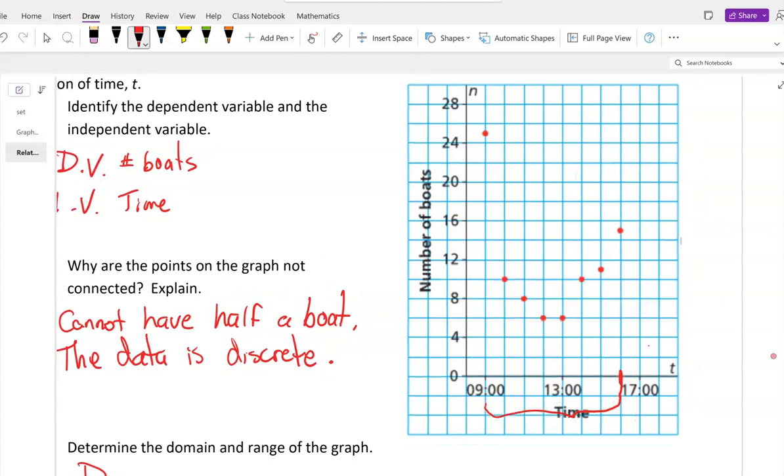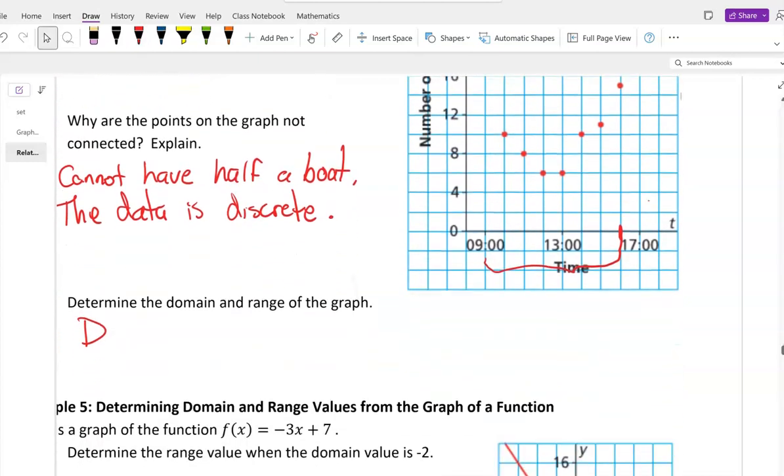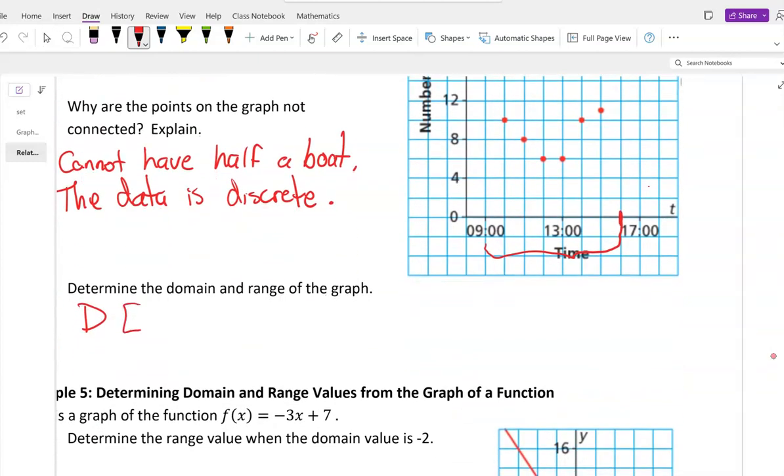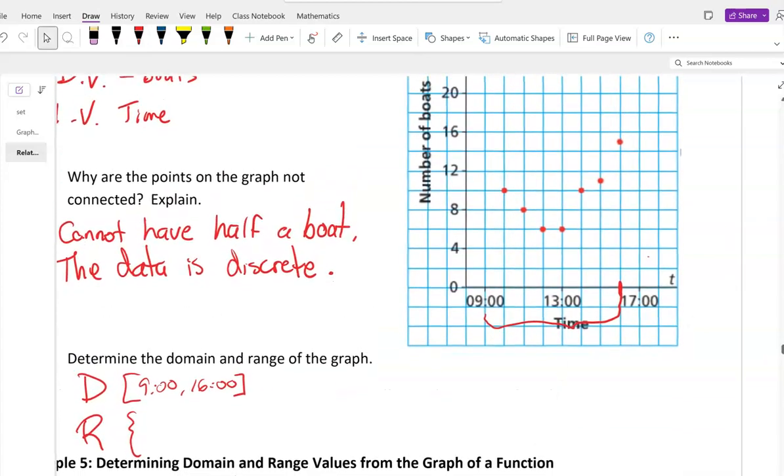I think that's 14, 15, 16 o'clock. So I think what we should do for domain is, say, from 9 to 16, because it's continuous. On the other hand, the range, I think we're only going to list the values that are given.